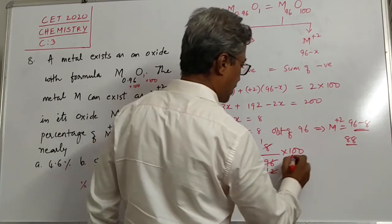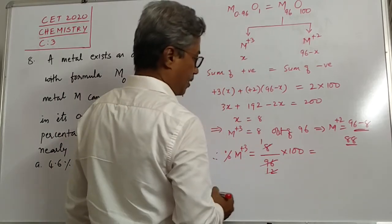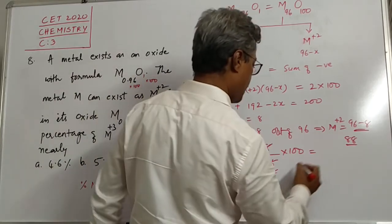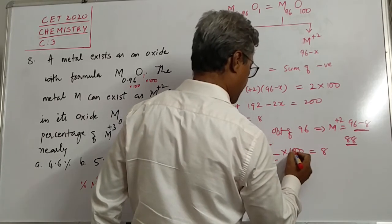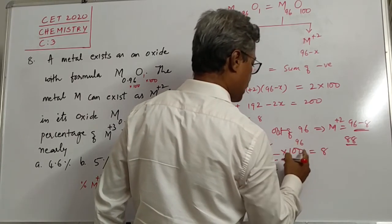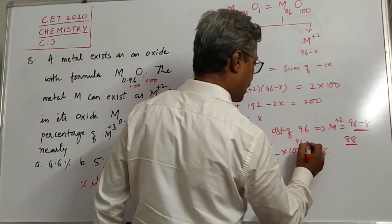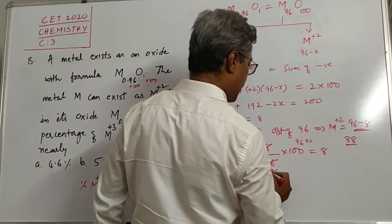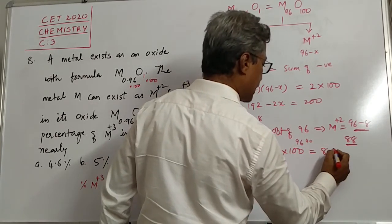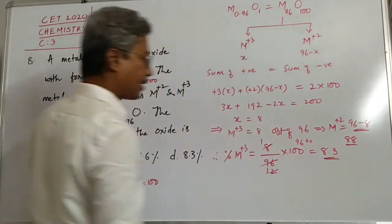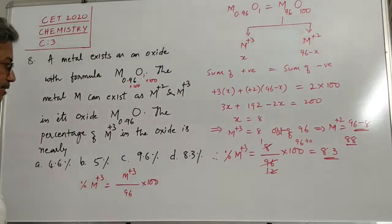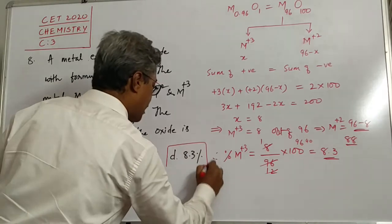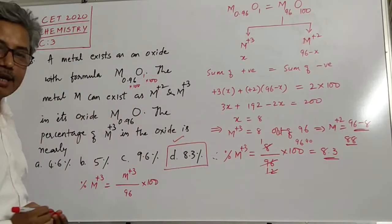This is 12 eights are 96, 4 is remaining, point, it will be 40. 12 threes are 36. So roughly 8.3 percent. Just look at this answer. Yes, this is the answer. You got this, students?